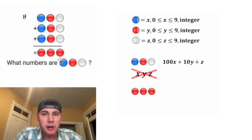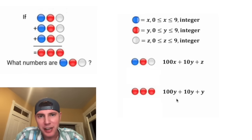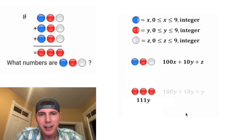And then same thing for the red, red, red down here. We can't just call this y, y, y. It's got to be 100y plus 10y plus y. And we can combine like terms here to get 111y. So these three red dots can be called 111y.